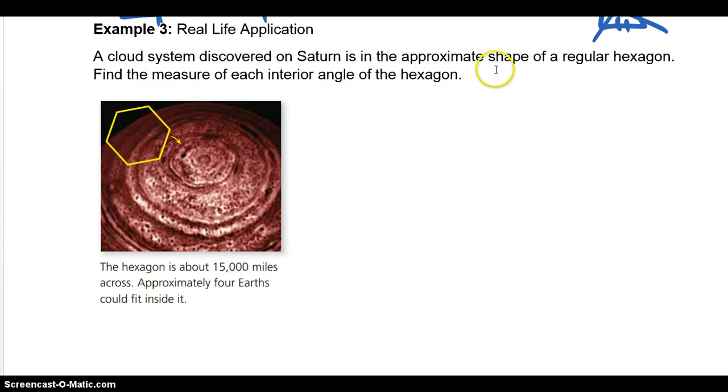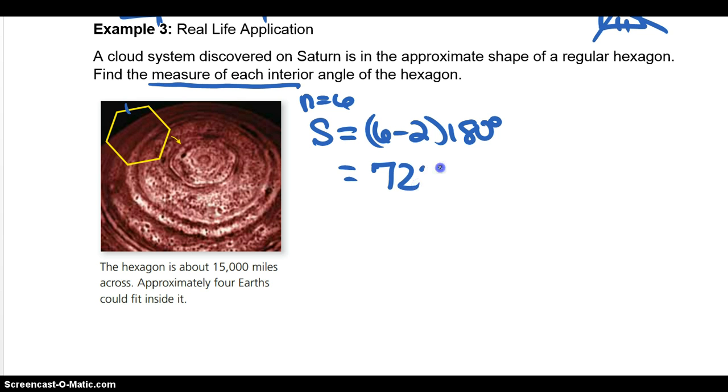So, in this case, a cloud system discovered on Saturn is the approximate shape of a regular hexagon. Find the measure of each interior angle of the hexagon. So even if I couldn't tell from the picture, I would know that it was a hexagon, so I would know that it's six-sided. But I can count one, two, three, four, five, six. So n equals six. So make sure you identify that. So if I'm trying to find the measure of each interior angle, the individual angles here, I still first need to find the sum. So I'm still going to use that formula. The sum is equal to six minus two times 180. So six minus two is four. Four times 180 is 720. So the sum of all the angles is 720 degrees.